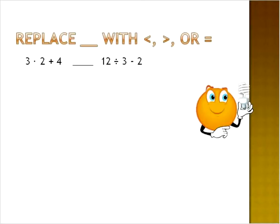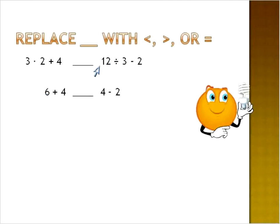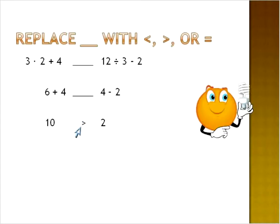We're going to look at solving both sides of this inequality and then placing the correct symbol. On the left it says three times two plus four. The first step: three times two is six, plus four. On the right, twelve divided by three is four. Now six plus four is ten, and four minus two is two. We're going to place the symbol that shows ten is greater than two, so we use the greater than sign.